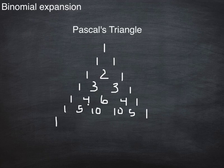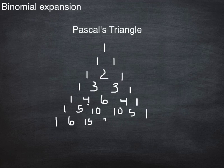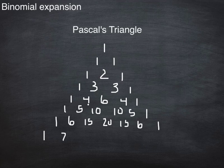Let's do one more row. So we have 1, 6. 5 plus 10 is 15. 10 plus 10 is 20. 15, 6, and 1. And you can find the 7th row, the 8th row, the 9th row, whatever row you want.